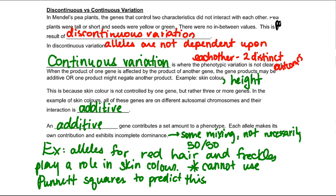So recall from our lesson all the way back, I want to say lesson two or three back when we were in real school. In Mendel's pea plants the genes that control two characteristics did not interact with each other. They were independent of each other. They didn't interact with each other. Pea plants were tall or short, seeds were yellow or green, there was no in between, zero in between.